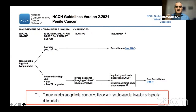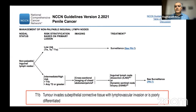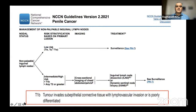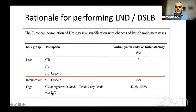NCCN also recommends surveillance for low-risk disease. For intermediate risk (T1B) or high risk (T2 or greater), NCCN recommends cross-sectional imaging of the chest, abdomen, and pelvis, plus inguinal node dissection or dynamic sentinel lymph node biopsy if anything is suspicious. T1B tumors invade sub-epithelial connective tissue with lymphovascular invasion, and their chance of lymph node metastasis is up to 25%.